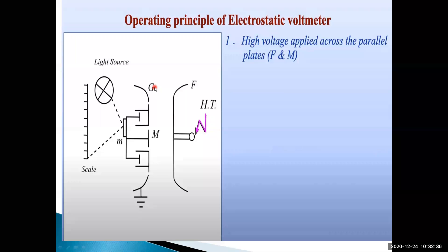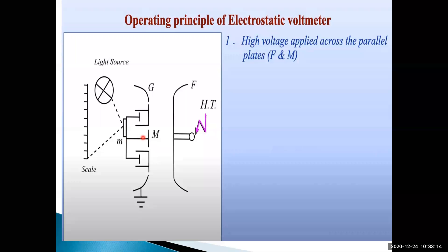Operating principle of electrostatic voltmeter: in basic measurement, instead of using a scale with a pointer, here a light deflection method is used - a light source beam falls on a mirror and is reflected onto a calibrated scale. Based on attraction and repulsion of the moving plate, the light reflected onto the scale changes position. The high voltage terminal is connected to the fixed plate.